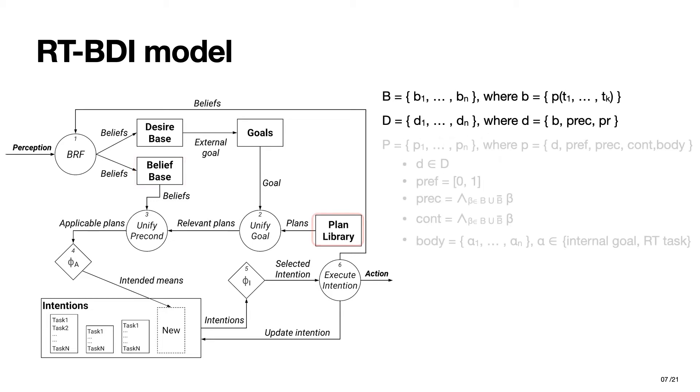A plan P, instead, is represented as a tuple defined by a number of parameters. D is the triggering desire that the plan is designed to achieve, while PREF is a cost function sorting, by preference, the possible plans to achieve the same desire. Similar to the desire's definition, PREC is the set of preconditions, so the conjunction of belief literals needed for the activation of the plan,